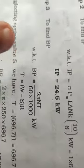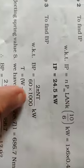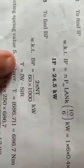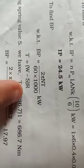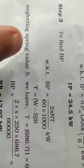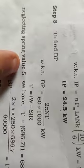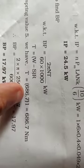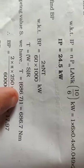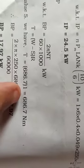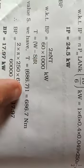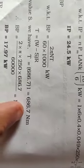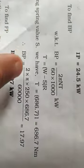Now to find BP: BP equals 2 pi n T divided by 60,000, but we don't know torque. Torque equals effective load times effective radius. Spring value is not given, so we consider it as zero. T equals W, 686.7 Newton meters into r, radius 1 meter, so it is 686 Newton meters.